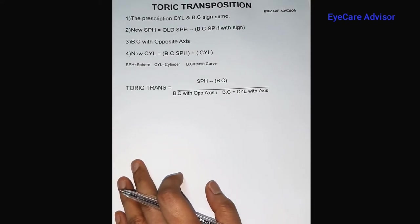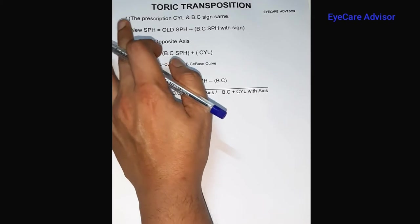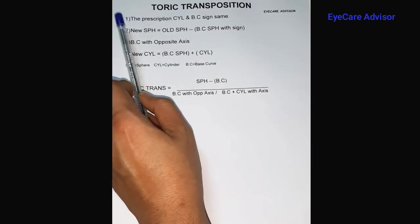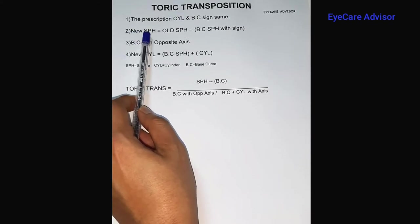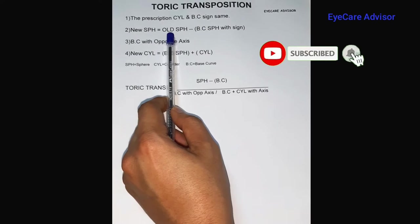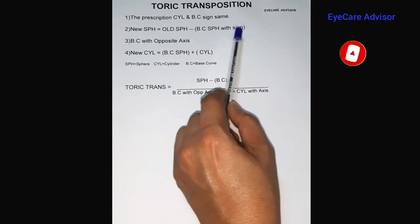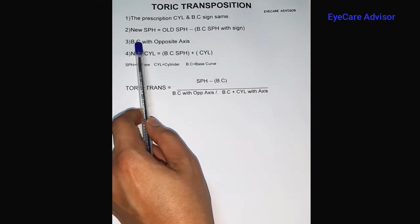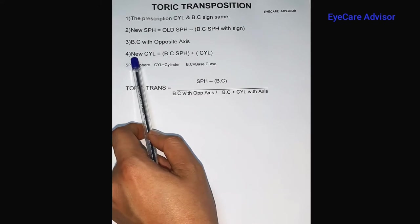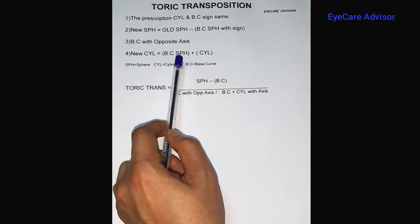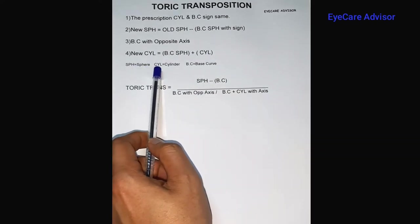For the first step, the prescription cylinder and the base curve should be the same. For the second step, the new sphere will be the old sphere minus the base curve sphere with sign. For the third step, the base curve with opposite axis, and the new cylinder will be the base curve of the sphere plus the sphere plus cylinder. Here Sph is sphere, Cyl is cylinder, and BC is base curve.